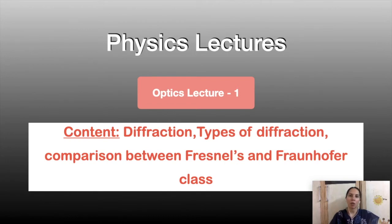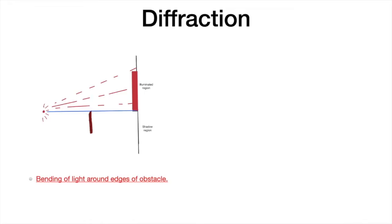So in this lecture we will talk about diffraction of light, its types, and the comparison between Fresnel's and Fraunhofer's diffraction. By definition, diffraction is bending of light around edges of an obstacle.